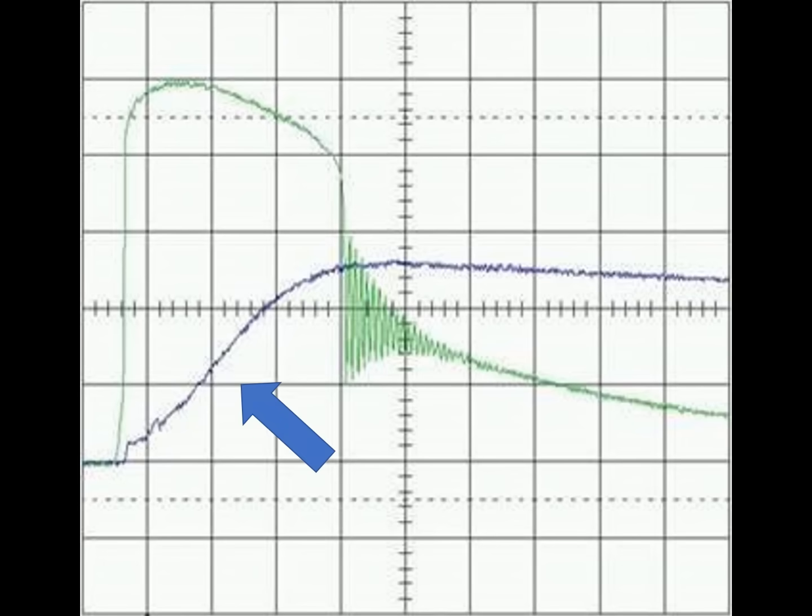The blue waveform is the let-through for a series filter. This shows a much lower rate of voltage change as well as a significantly reduced peak voltage.